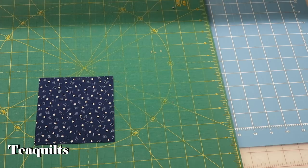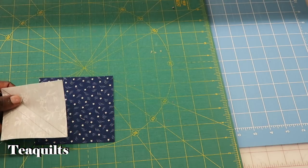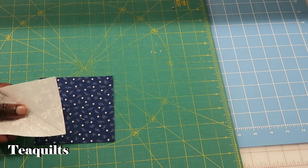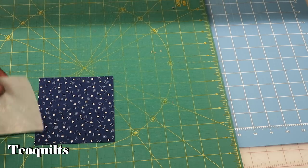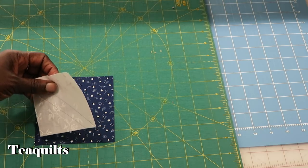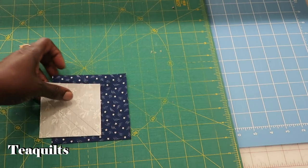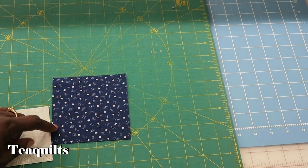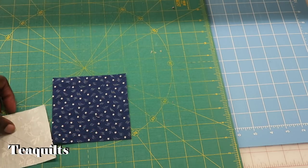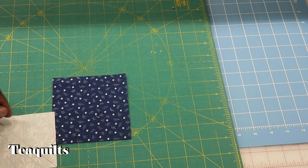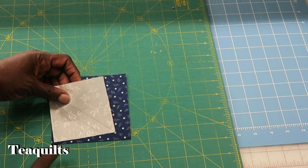The next step would be to place one of your three and a half inch squares on top of one of your print four and a half inch squares. This is what makes it floating. If you didn't want this to float, you would just use two and a half inch squares and it wouldn't float in the middle here when it joins.